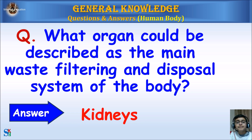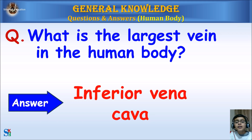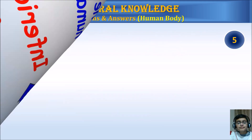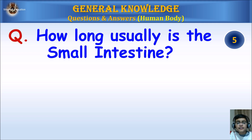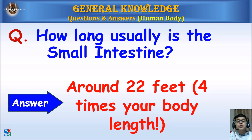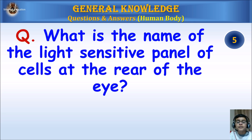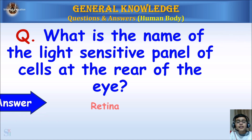What organ could be described as the main waste filtering and disposal system of the body? Answer: Kidneys. What is the largest vein in the human body? Answer: Inferior vena cava. How long usually is the small intestine? Answer: Around 22 feet — four times your body length.